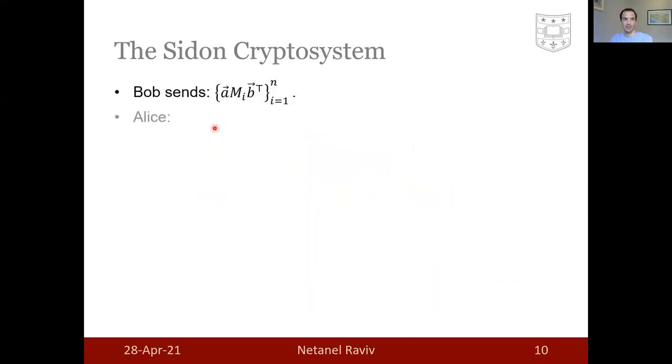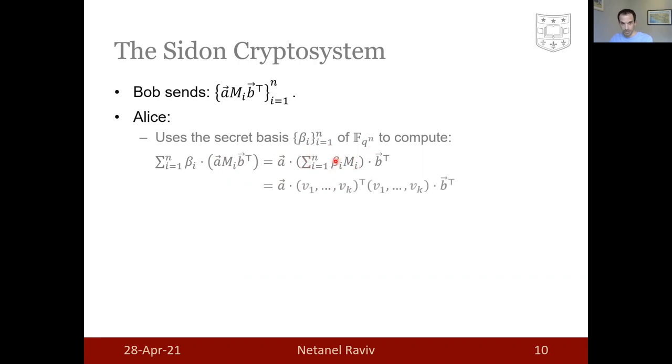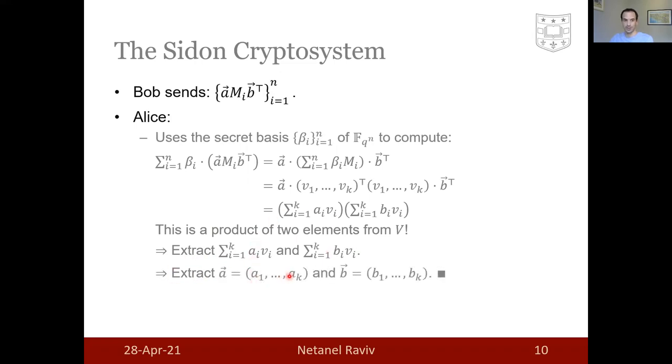Moving on, when Alice receives this ciphertext, she uses the secret basis of the extension field to compute the following linear combination. It equals this expression where you can see that the expression here inside the parenthesis is simply the multiplication table of the secret Sidon space V. As such, this linear combination is simply a product between two elements in the secret Sidon space V. Therefore, these two elements can be extracted, from which Alice can extract the precise vectors a_1 through a_k and b_1 through b_k, which is Bob's message.